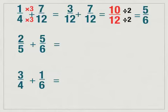If you look at the next example, we have two-fifths plus five-sixths. We have a denominator of five and a denominator of six. Five does not fit into six perfectly, so we're going to have to change both fractions to get a common denominator. If you think about the multiples of five — five, ten, fifteen, twenty, twenty-five, thirty — and think about which of those numbers six can go into. Six cannot go into five, ten, fifteen, twenty, or twenty-five, but six can go into thirty. So thirty is going to be my common denominator.